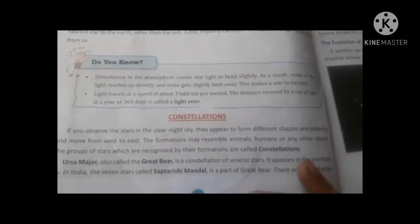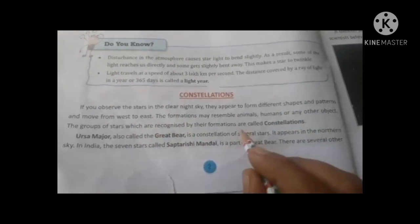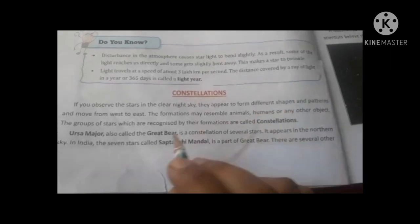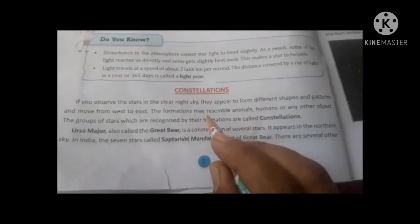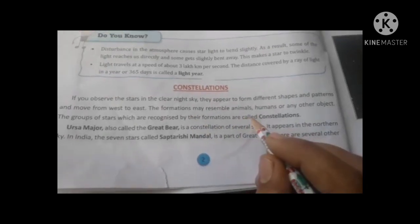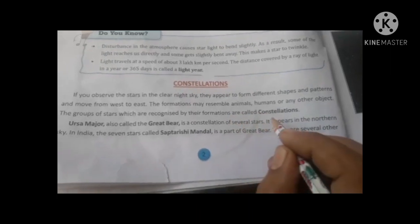Constellations. If you observe the stars in the night sky, they appear in different shapes and patterns. The stars form shapes like human beings or animals, which are called constellations.